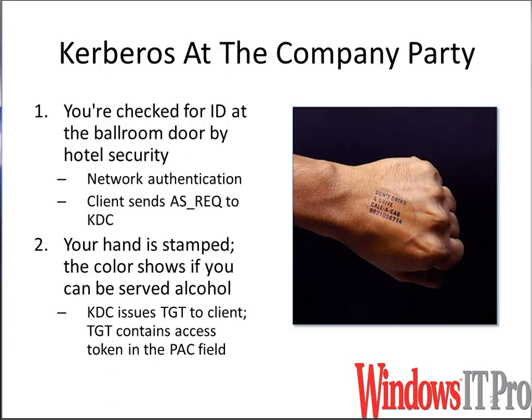The next thing that happens at the party is that your hand is stamped. The color that your hand is stamped shows whether or not you can be served alcohol — in other words, are you over 21 or not? In the computer world, this means the KDC is issuing the TGT to the client. The TGT contains the access token — the Windows access token — in the PAC field of its message.